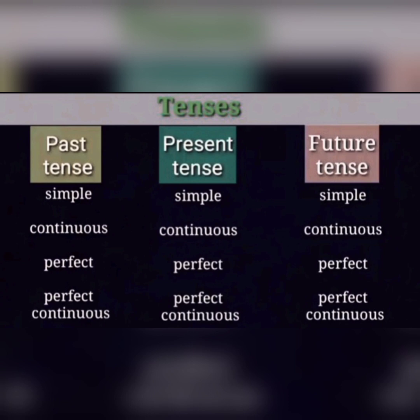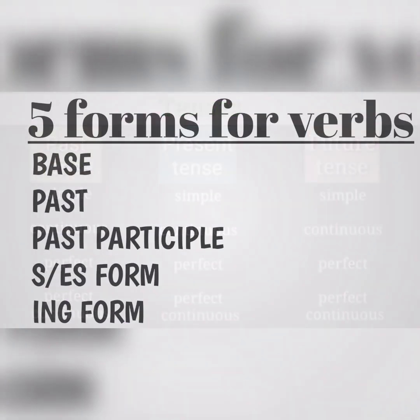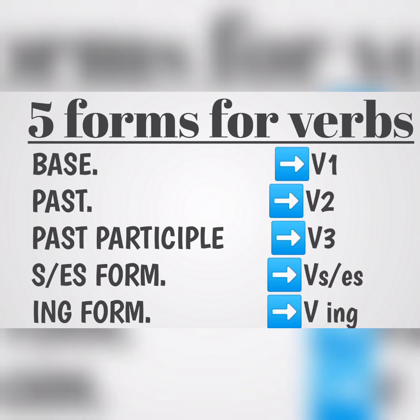Before looking into the tense forms further, we need to know the forms of verbs. There are five forms of verbs: base form, past form, past participle form, s or es form, and ing form.